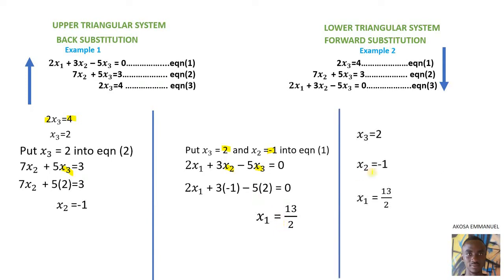So now we have S3 equal to 2, S2 equal to negative 1, and S1 equal to 13 over 2. Our solution is [13/2, -1, 2] transpose.